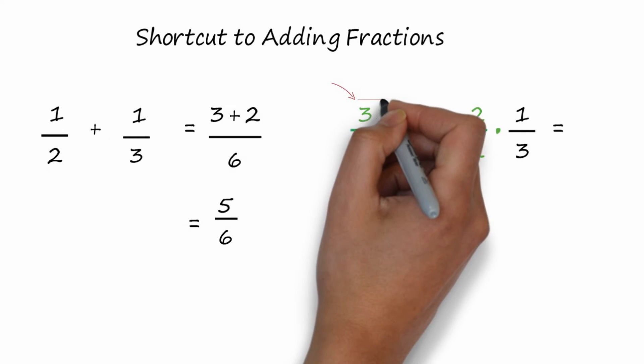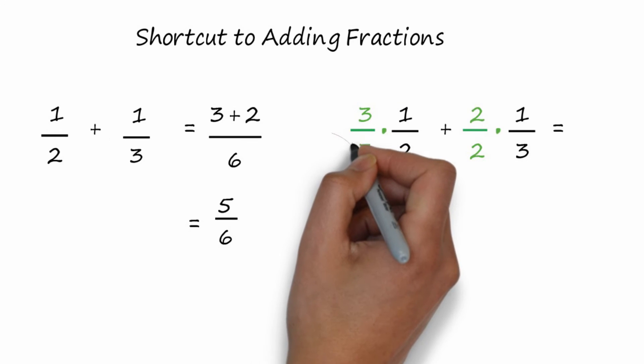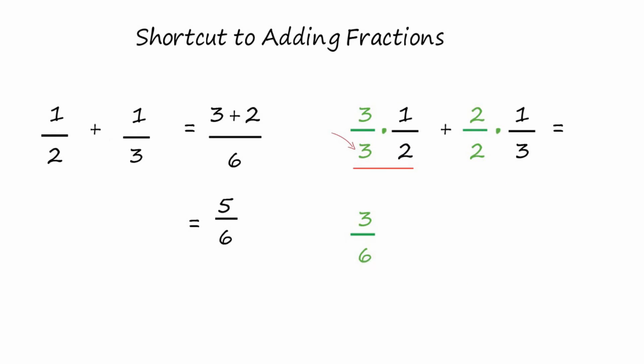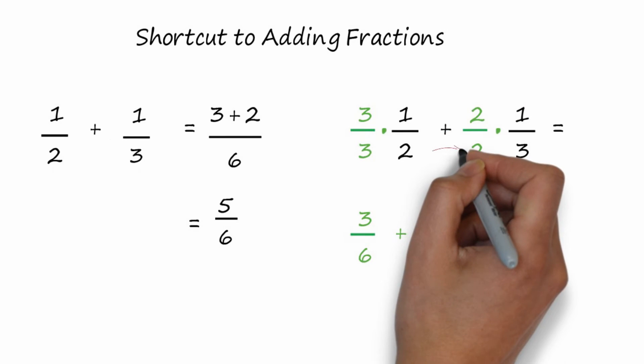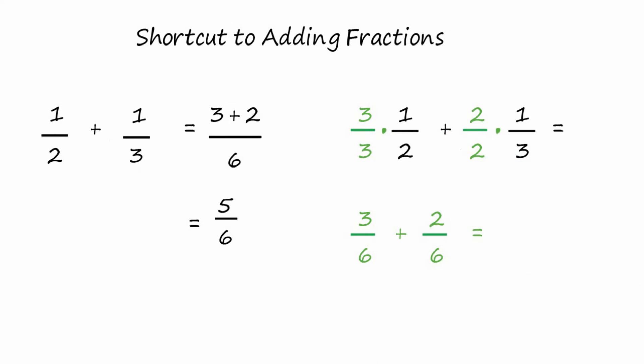In the first fraction, three times one is three, and three times two is six. Second fraction, two times one is two, and two times three is six. Now both fractions are over six. We can just add them up by adding across the top. Three plus two is five, and the answer is over six, five-sixths.